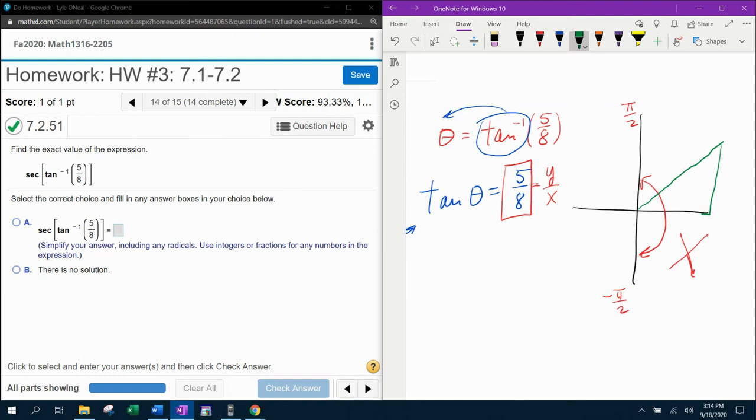And so now that says that our angle has to be in the first quadrant. So here's our theta. Remember that tangent theta is y over x. So the y value is 5, that's the up and down side, and the x value is 8.